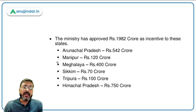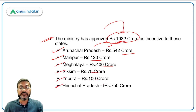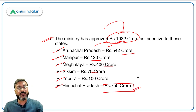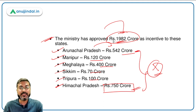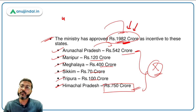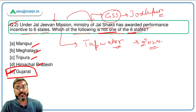The total amount of incentive is Rs. 1,982 crores. Out of this, Arunachal Pradesh gets Rs. 542 crores, Manipur Rs. 120 crores, Meghalaya Rs. 400 crores, Sikkim Rs. 70 crores, Tripura Rs. 100 crores, and Himachal Pradesh the highest — Rs. 750 crores. The individual amounts may not be critical for the exam, but remember the total of Rs. 1,982 crores. Since Gujarat is not among the six states, the correct answer is option E — Gujarat.